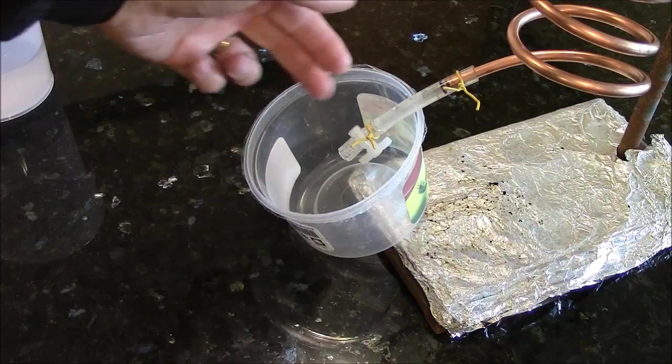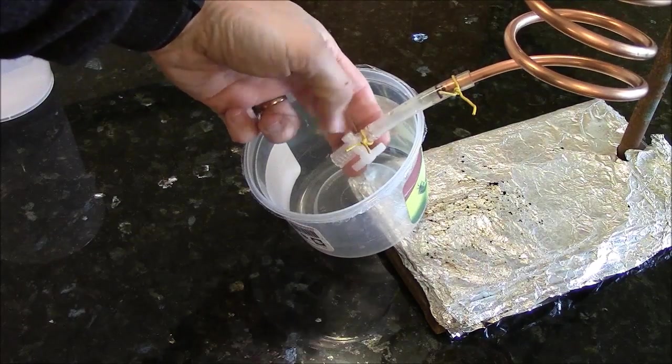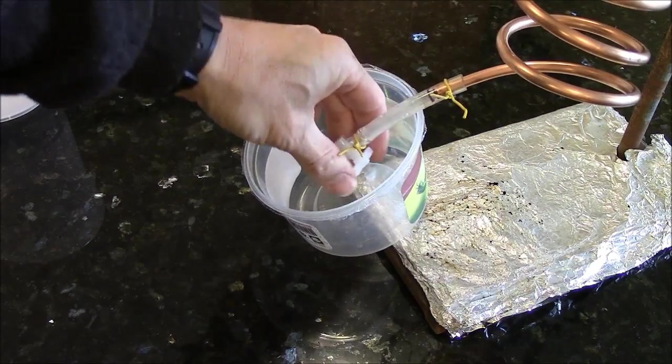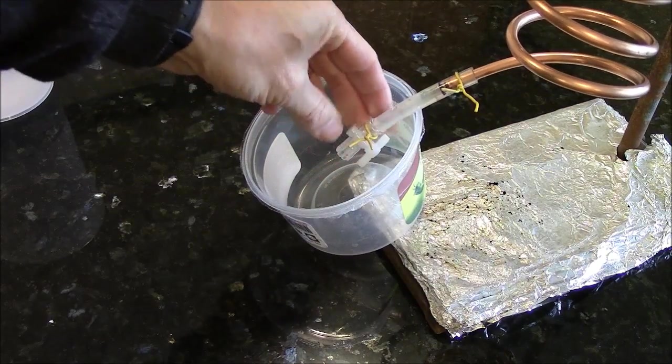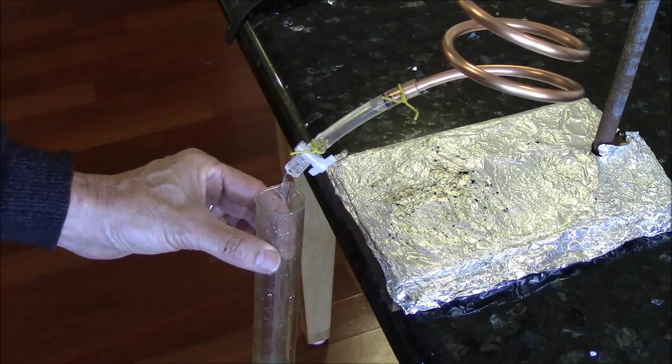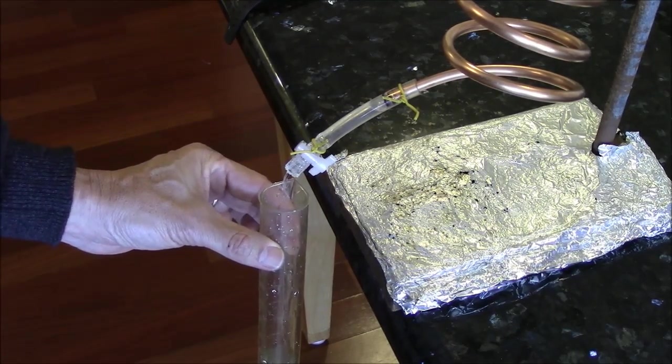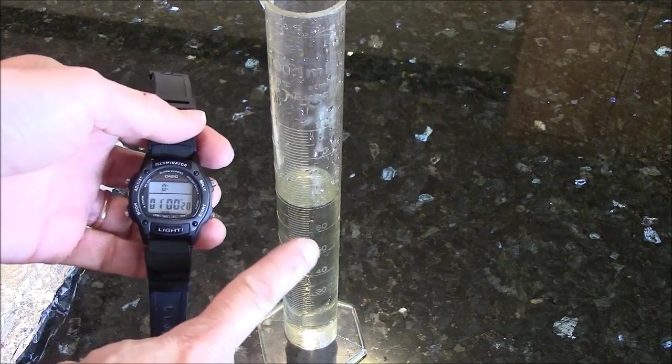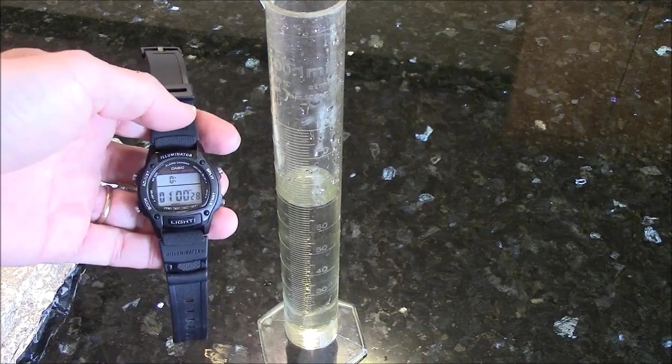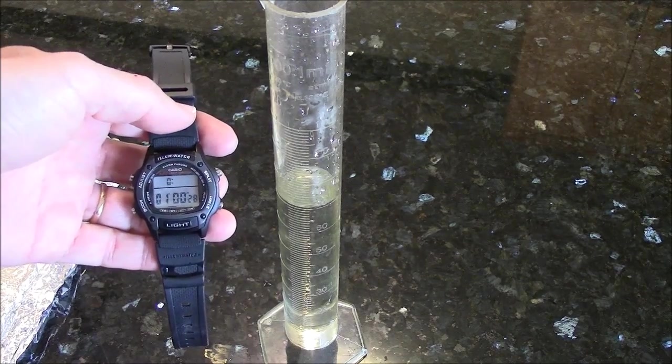Controlling the flow rate will be an important variable. So I'm going to do some experiments with just cold water to see if I can adjust this valve to get a reasonable flow rate. On my last run, I collected 70 milliliters in one minute. Based on that, I can decide whether that's reasonable for my experiment.